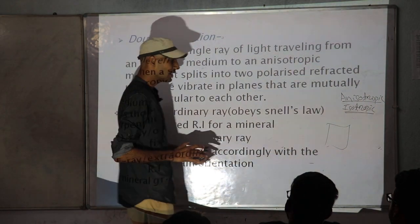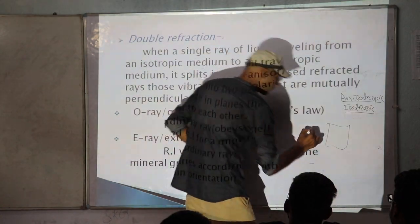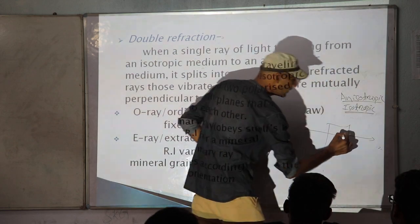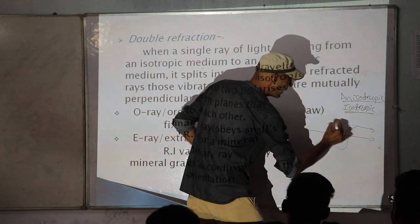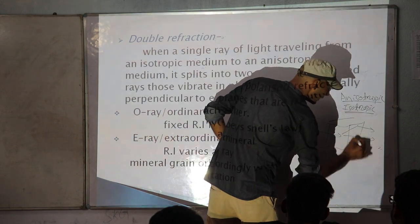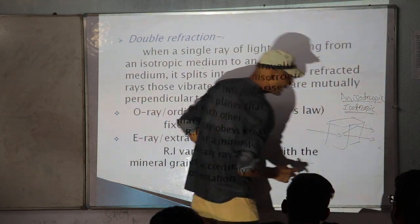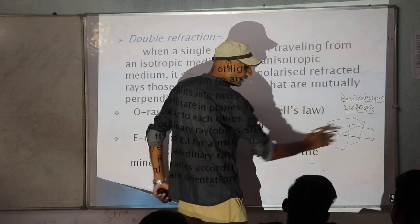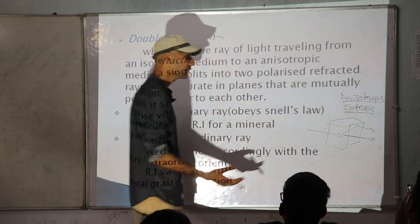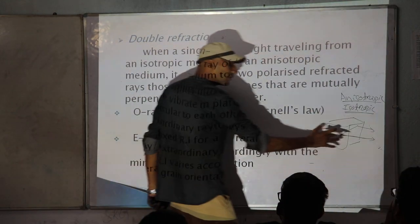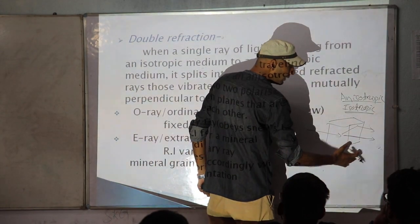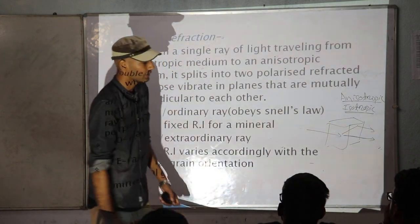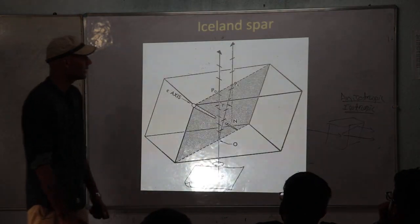Whenever a light ray enters an anisotropic mineral, it will split up into two rays. One continues the same path as the previous ray, and another one is deviated from its path. After going away from the mineral, they are parallel in propagation.